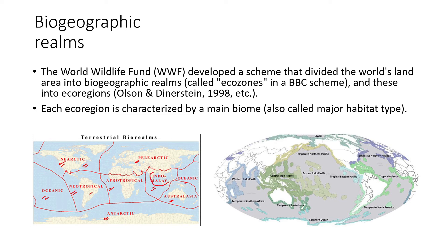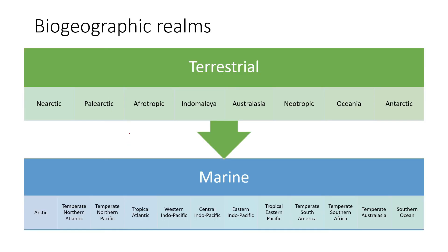The Indian, Philippine, and South Asian countries are considered part of the Indo-Malayan region. Australia and parts of Asia form Australasia. The remaining oceanic region consists of different islands. These terrestrial biogeographical realms, along with marine realms such as temperate Northern Pacific, Western Indo-Pacific, and temperate Southern Africa, were developed by the World Wildlife Fund to divide the entire biogeographical system throughout the world.